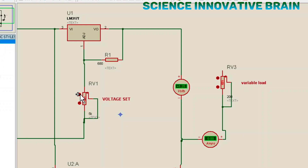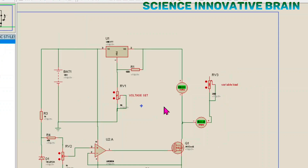I will decrease the voltage — the minimum voltage is 1.25 volts. Whatever voltage we want to set, we can set it. If you see here, the output voltage is 1.25 volts. Now we will set the output voltage to 10 volts using this potentiometer. The output voltage is now exactly 10 volts.